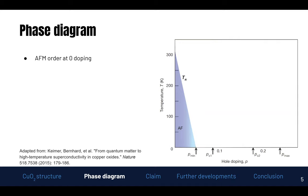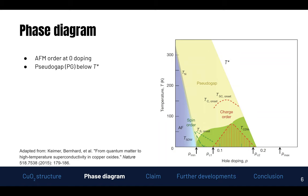Now we're going to play an experiment: we are going to slowly increase the hole doping and build up the rest of the phase diagram. If we do this we start to see new phases appear. We see a pseudo-gap below T*, where there is a severe reduction in the density of states but it's not fully gapped out as in the superconducting phase. We also see the superconducting dome, highlighted in green, and different kinds of orders including charge orders, which we will not be discussing in today's talk.